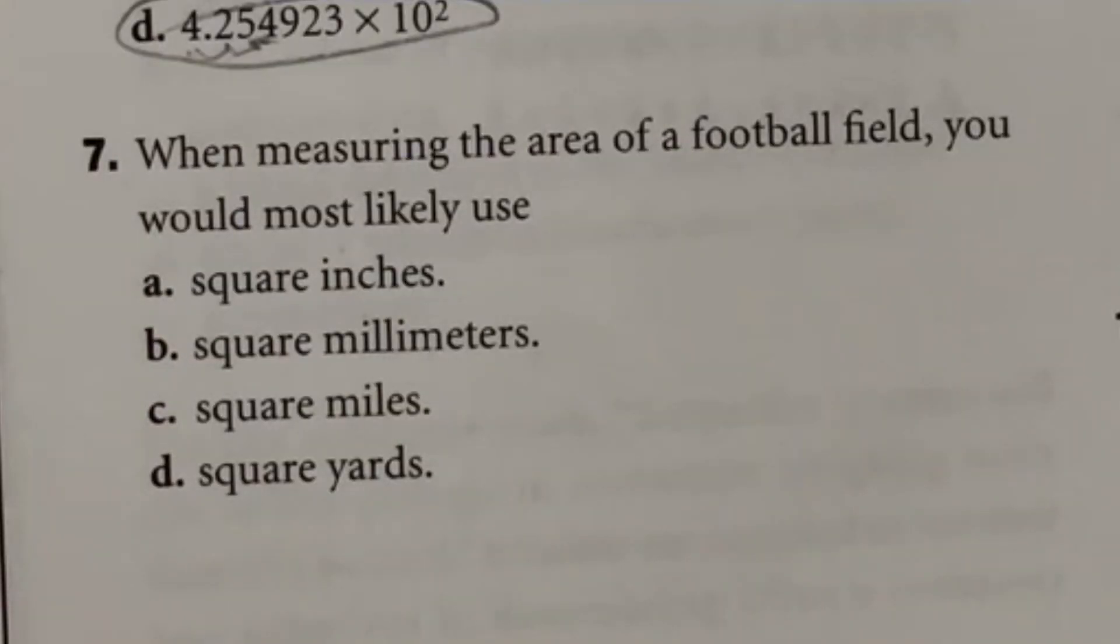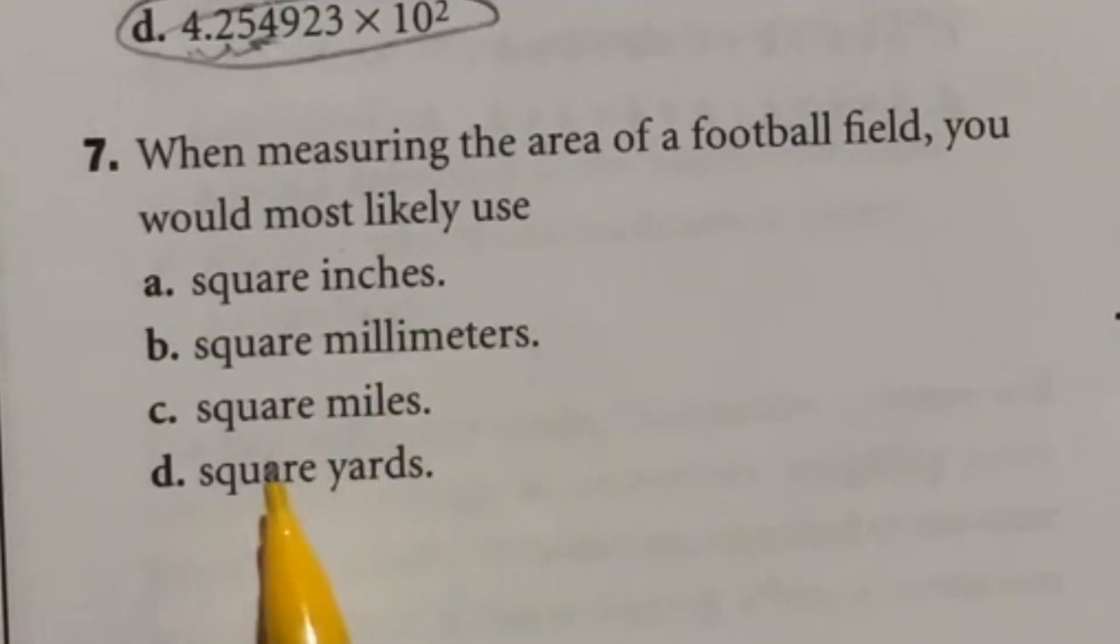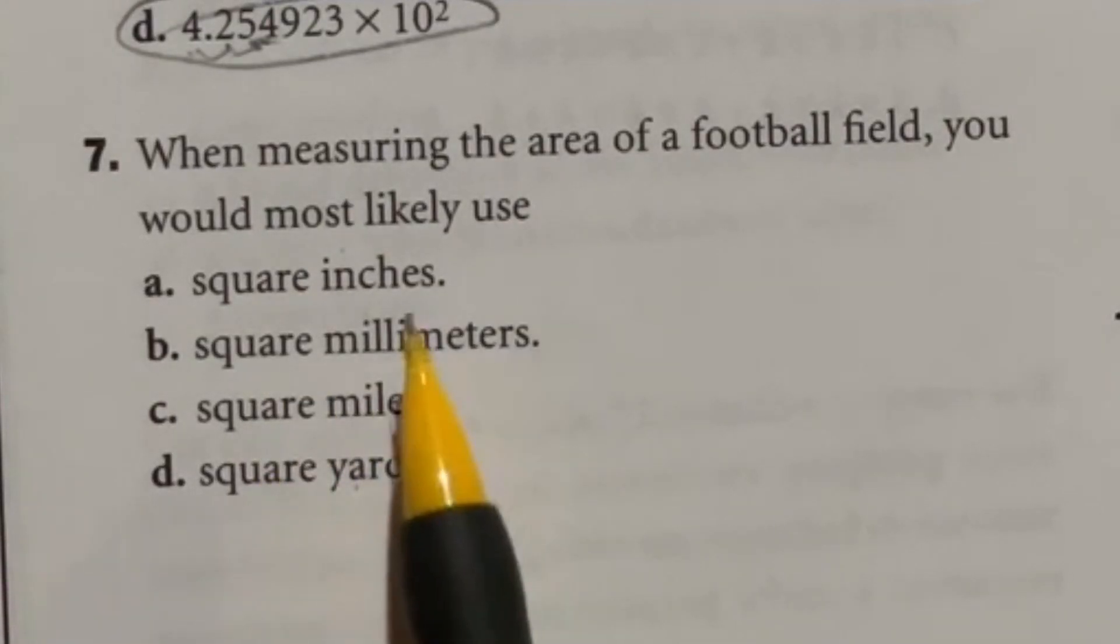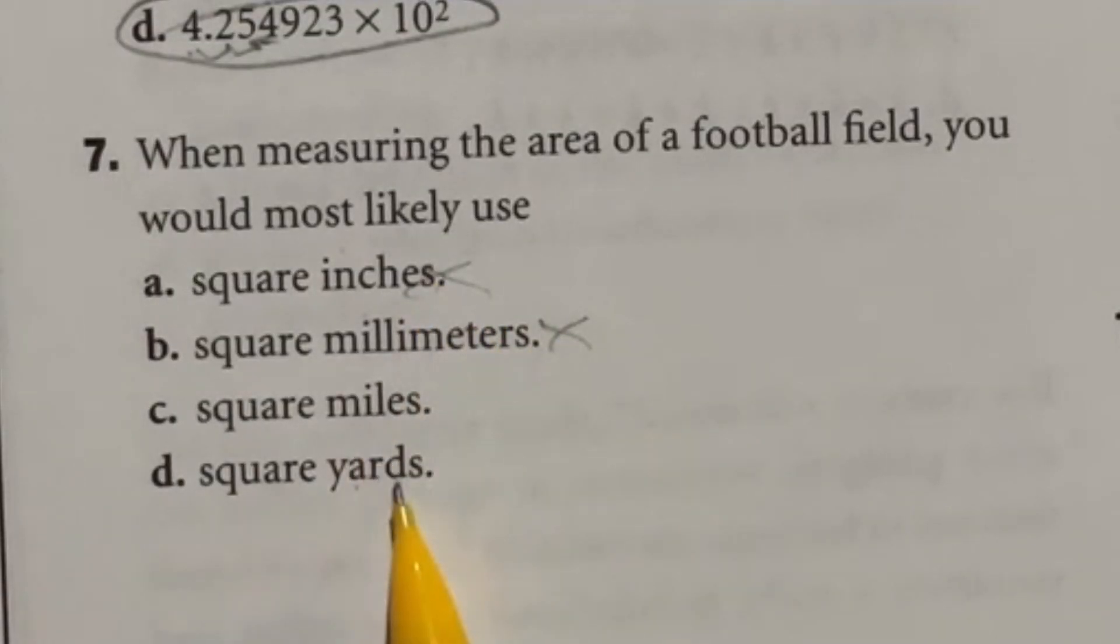So number seven is just using some logic here, along with if you know how big these items are. So it says when measuring the area of a football field, you would most likely use what? Square inches, square millimeters, square miles, or square yards. Well, inches and millimeters would be extremely small, so they'd be out right off the bat. But miles and yards, well, miles would actually be too big because you wouldn't even have one full mile with the length of a football field, and we know that football fields are already measured out to be 100 yards, so our answer here is D.